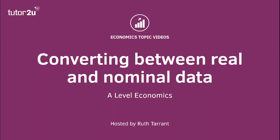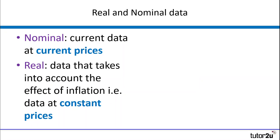Hi there, welcome to this economics revision video on quantitative skills. In this one we're looking at how to convert nominal data into real data. So why do economists need to do this? It's to allow us to get a better sense of changes in the underlying economy. There are a number of different terms we need to think about before we take a look at a super simple example.